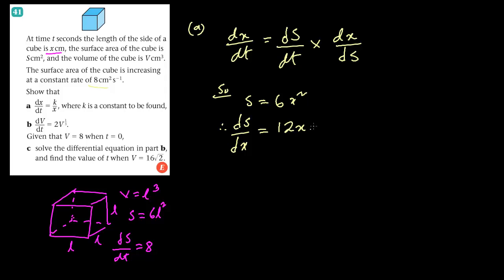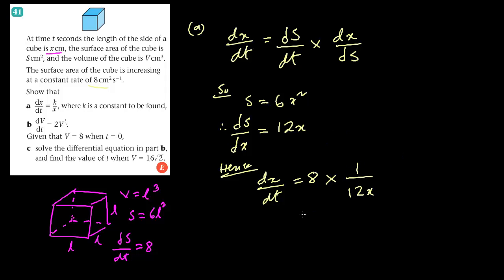Hence, dx by dt equals ds by dt, which is 8, times dx by ds, which is the reciprocal of ds by dx, so 1 by 12x. Simplifying: 8 divided by 12x gives 2 by 3 times 1 by x. So this is the constant k, meaning dx by dt equals 2/(3x), which we can write as k divided by x, where k is an arbitrary constant.